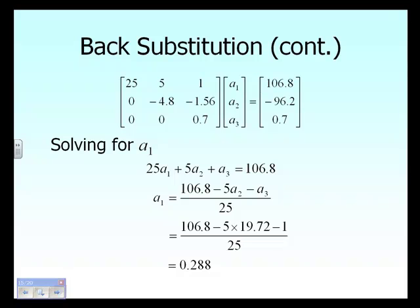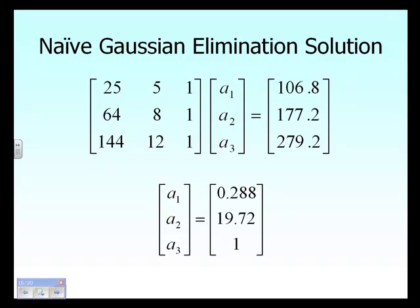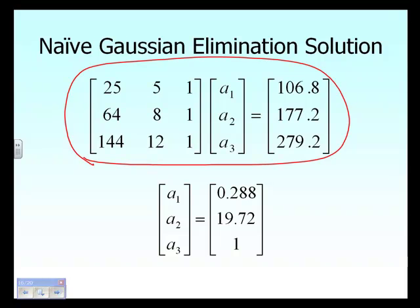Going backwards, we look at the first equation. It may seem we have three unknowns — A1, A2, A3 — but A2 and A3 have already been found in the back substitution steps. We rewrite the equation in terms of A1, substituting A2 equal to 19.72 and A3 equal to 1, and get A1 equal to 0.288. So we've solved the three-equation, three-unknown system using forward elimination and back substitution.